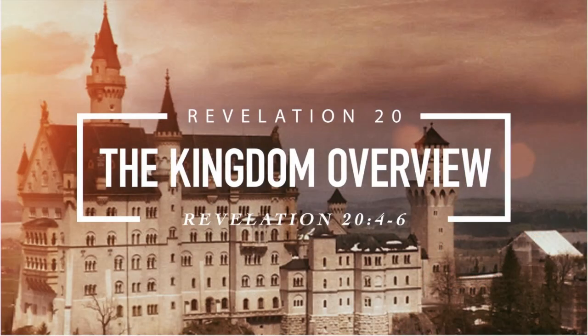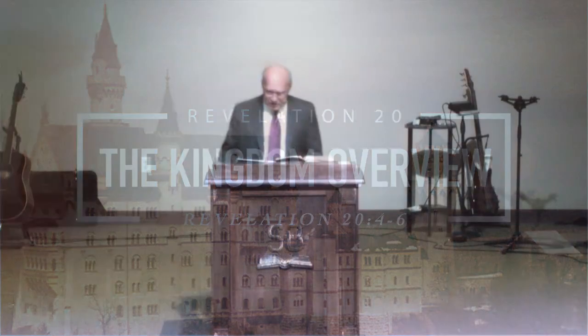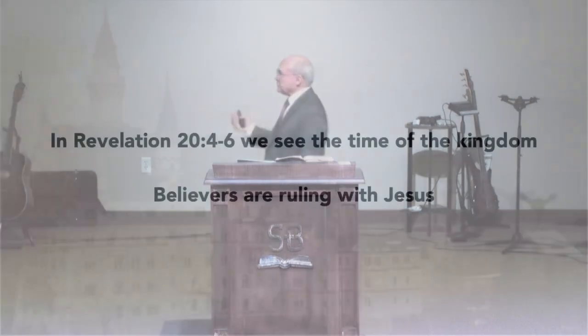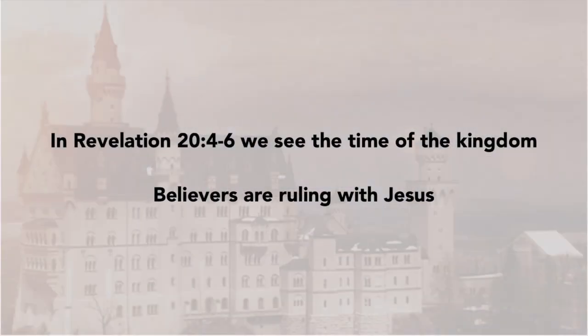We're right at the end where, beginning in Revelation 19:11, Jesus Christ comes to set up the kingdom. We saw Jesus coming out of heaven, riding on the white horse, judging the world. He's dealt with the beast and the false prophet. We saw in Revelation 20:4 through 6, the time of the kingdom, where believers are ruling with Jesus Christ.